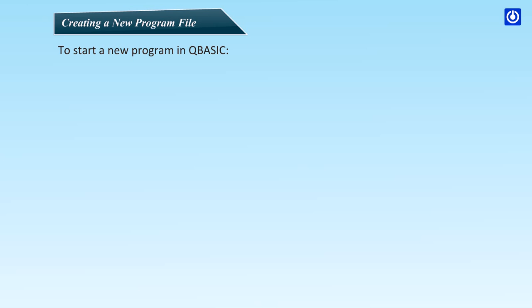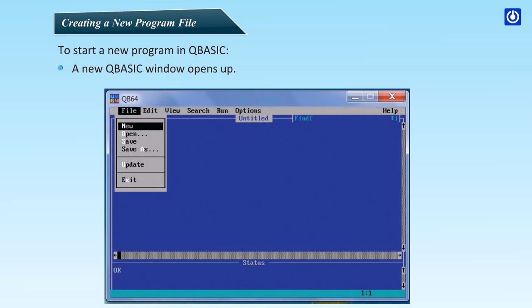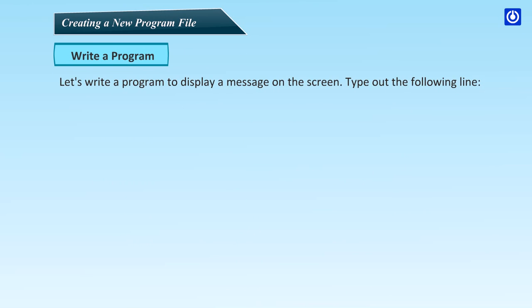Creating a new program file: to start a new program in QBasic, click the File menu and choose the New option, or press Alt+F for the File menu and then N to select New Program. A new QBasic window opens up. Let's write a program to display a message on the screen.